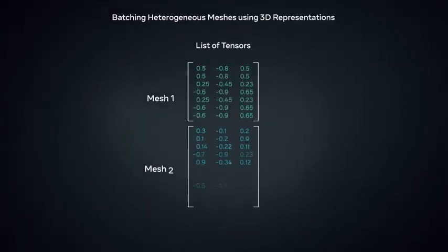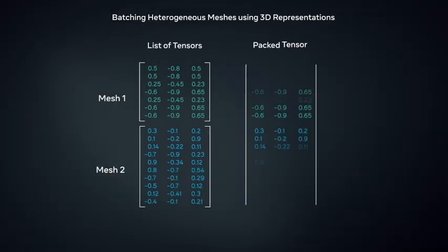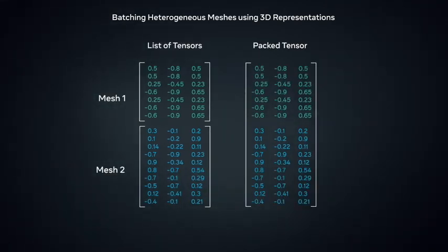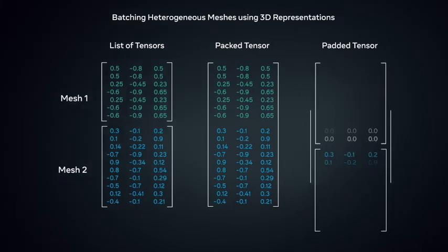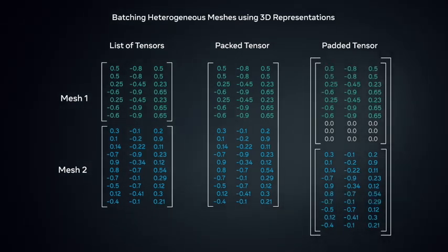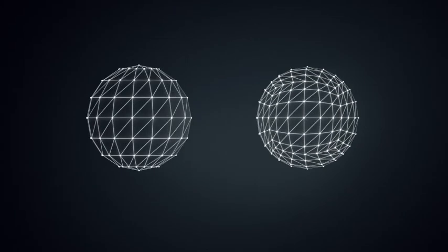This includes operators and loss functions for 3D data, such as chamfer loss, and meshes, a data structure with methods for manipulating batches of variable-sized meshes. For example,